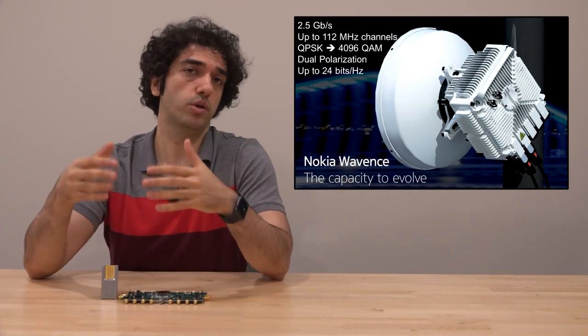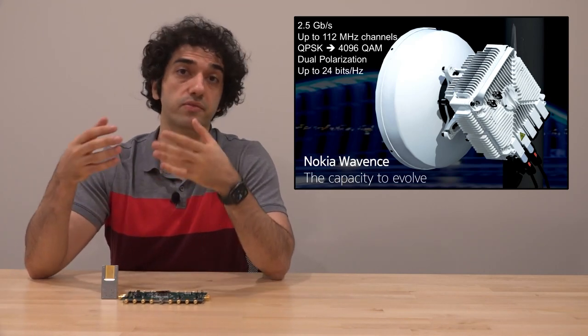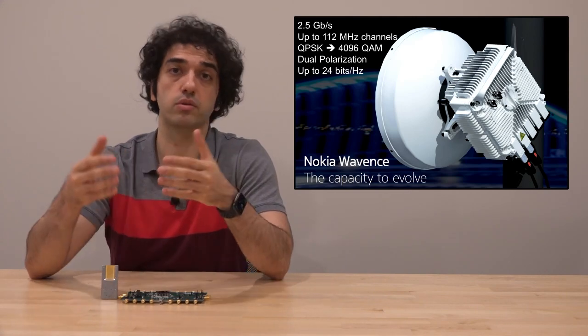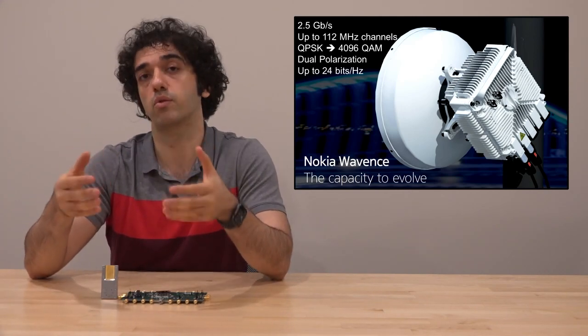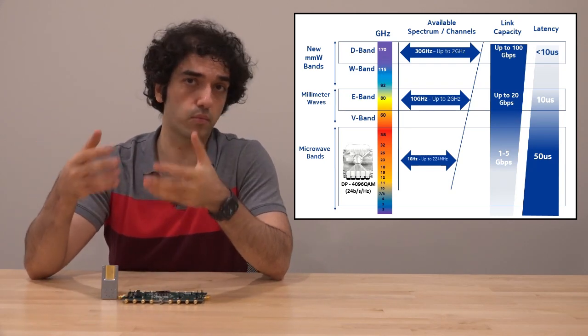Below 44 GHz, Nokia Bell Labs has already shown the Wavens product series, which accomplished 4096 QAM and spectral efficiencies as high as 24 bits per hertz. But of course, as you go to higher and higher frequencies, things become more and more difficult.